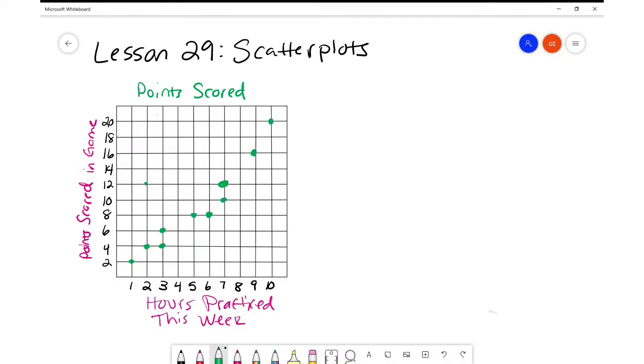Okay, and then we have one more person who practiced for two hours and ended up scoring 12 points. Okay, and before we move on, let's review the parts of the scatter plot. We've got to have that title. We've got to have labels on our x and y axis.